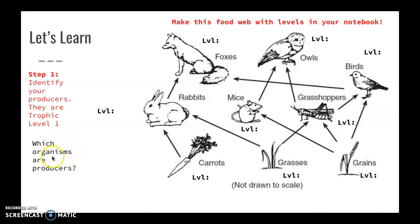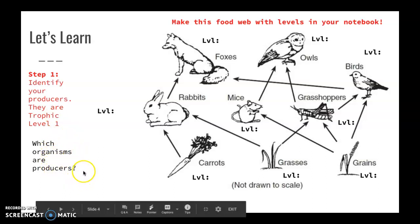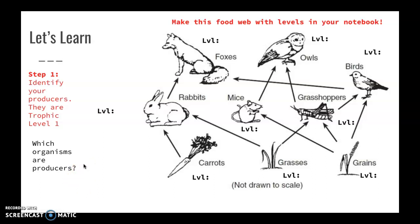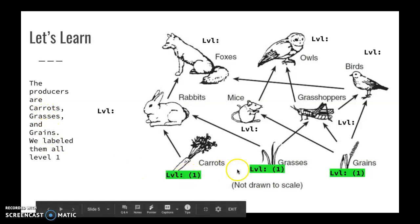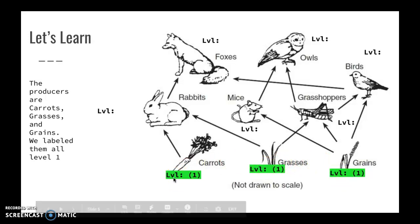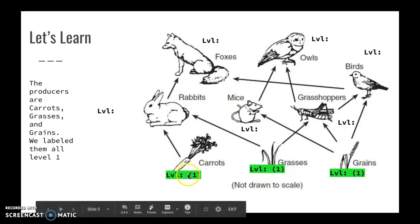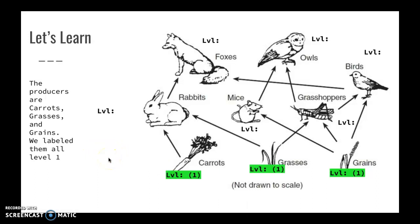Which organisms are producers? There are three of them. The producers are carrots, grasses, and grains. On the slide, we labeled them all level one. They are our producers — level one in our trophic levels — because they make energy from sunlight. They're the source of energy in our ecosystem. That's step one: identify your producers, they are your trophic level one.